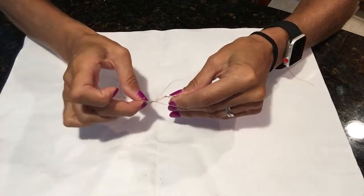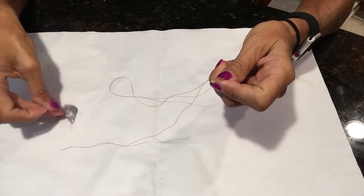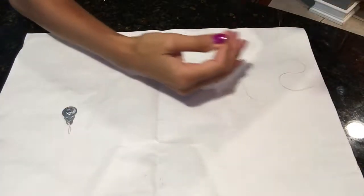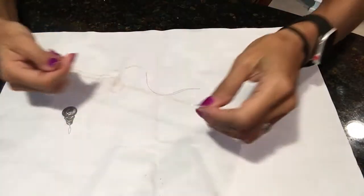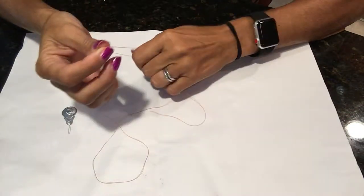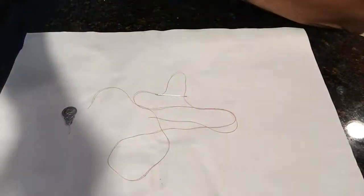You are going to take your needle threader and pull. Your needle threader comes out, and then I have my needle that has been threaded, ready to be knotted and ready to sew. Very simple process.